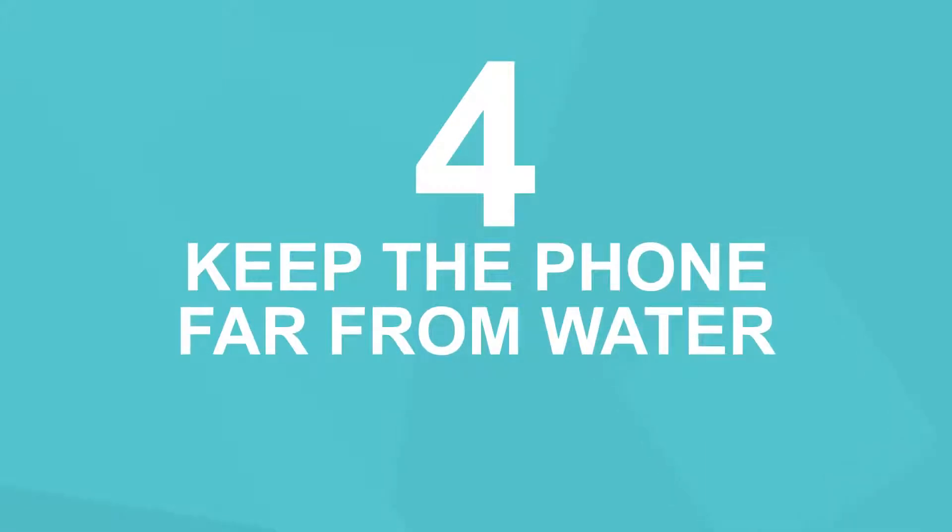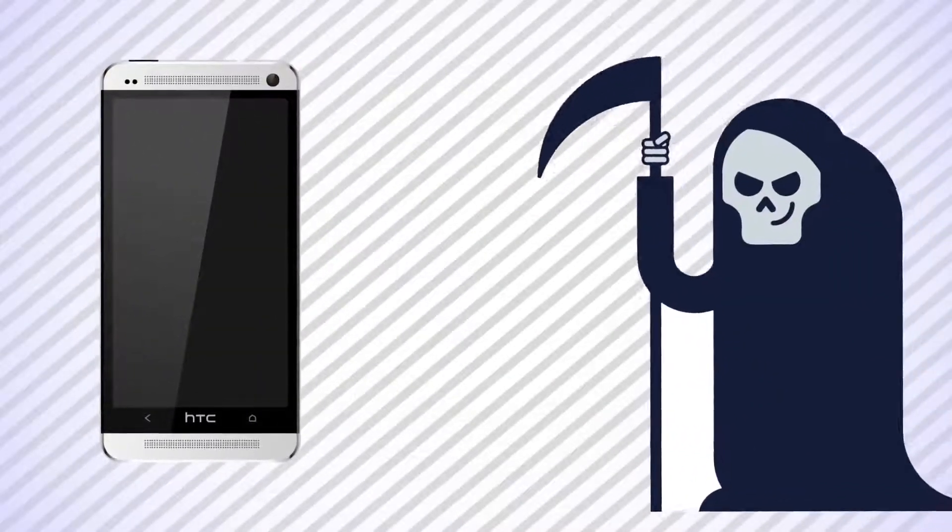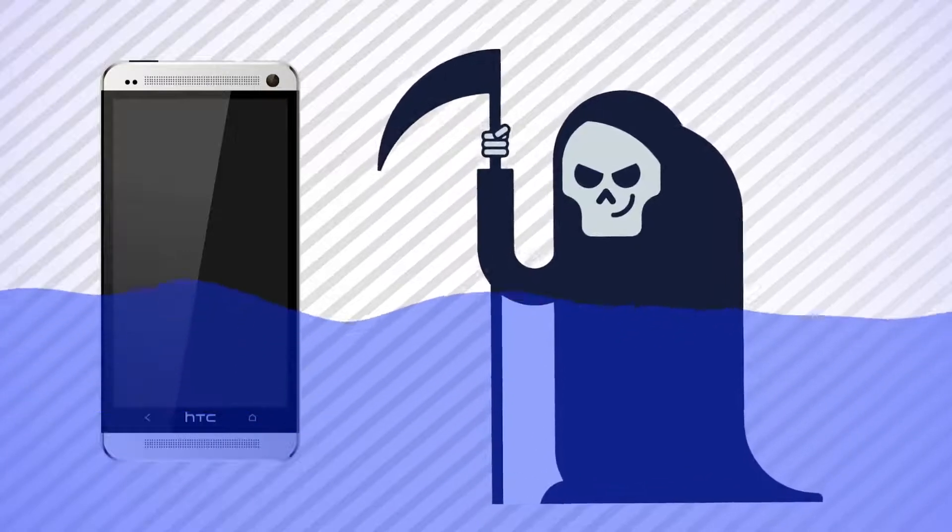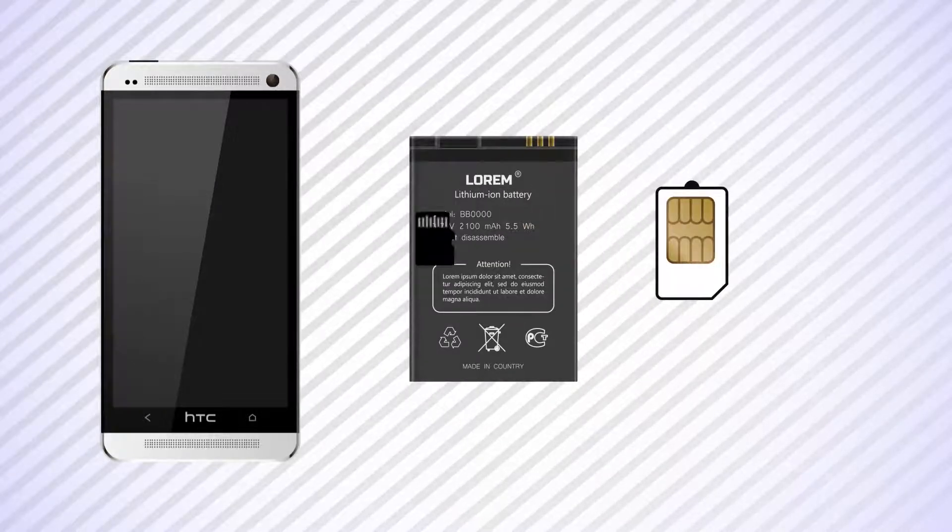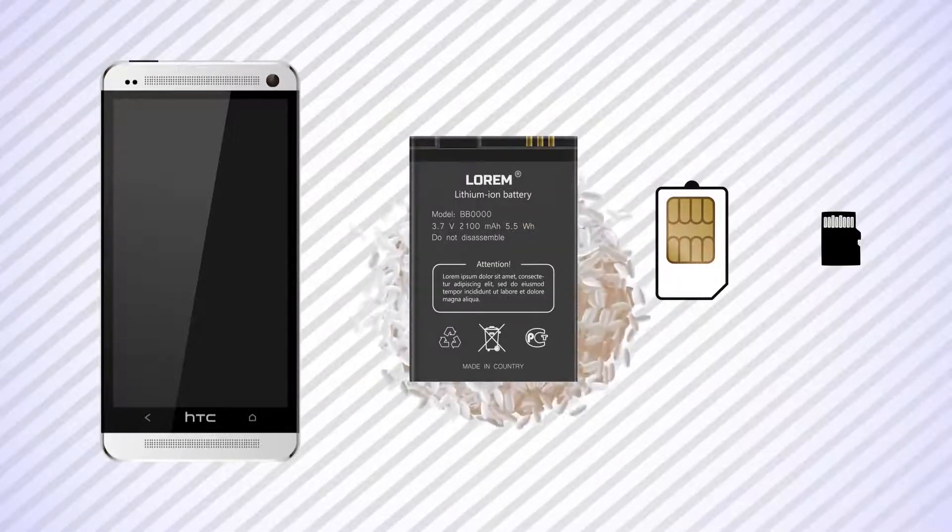Number 4. Keep the phone far from water. This might sound like an obvious thing, but still, many phones die in water. If you drop your cell phone into a pool or a sink, the first thing you should do after you get it out is to turn it off and remove the battery, if it's possible, of course. Remove all the SIM cards and the memory cards that you have. Put the contents in a bowl of rice and hope. The rice will absorb the water, and if you are lucky, your phone will survive.